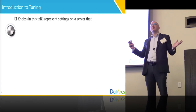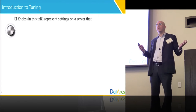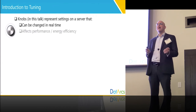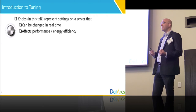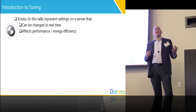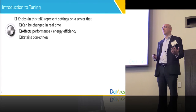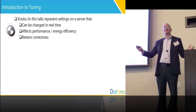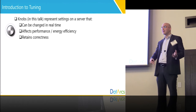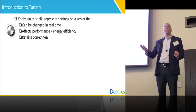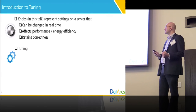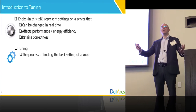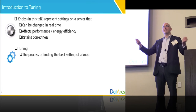Let's start with some definitions to make sure that we are on the same page. A knob in this talk is a setting on the server that can be changed in real time, can affect the performance and energy efficiency metrics of the server, and it retains correctness. This means that we can play with the setting as much as we'd like on a production system and still our workload will be able to finish and run correctly. The process of tuning is the process of finding the best setting for a particular knob or a set of knobs.